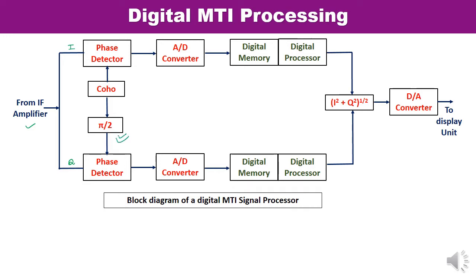The outputs of the phase detectors are 90 degrees out of phase with each other. The Q channel eliminates the effect of blind phase, which is very important. Following the phase detector, the bipolar video signal is sampled within each range resolution cell, and the voltage samples are converted into a series of digital words by an analog-to-digital (A/D) converter.